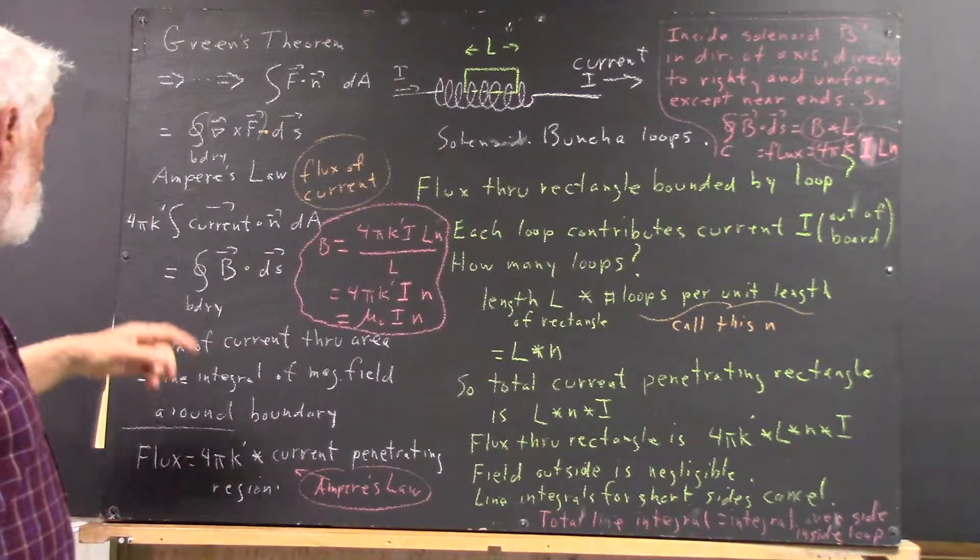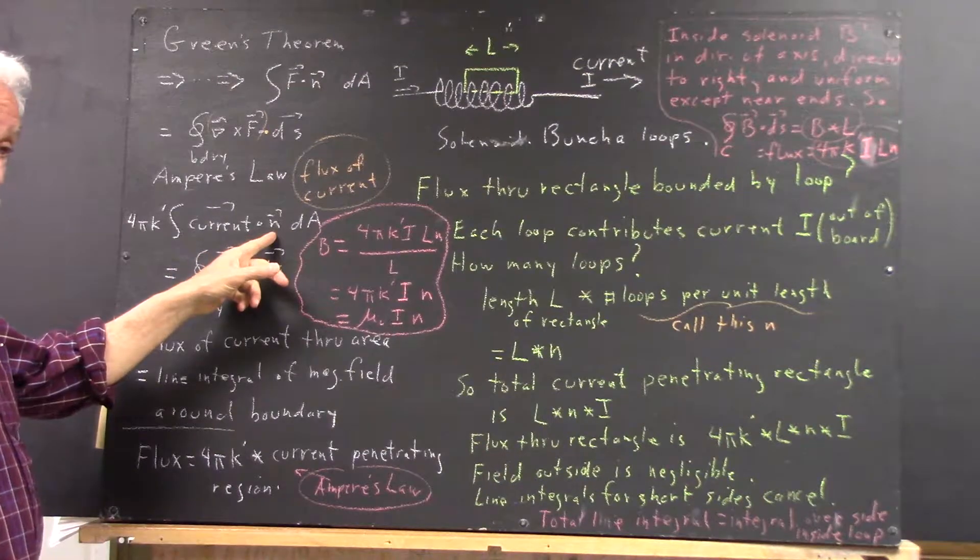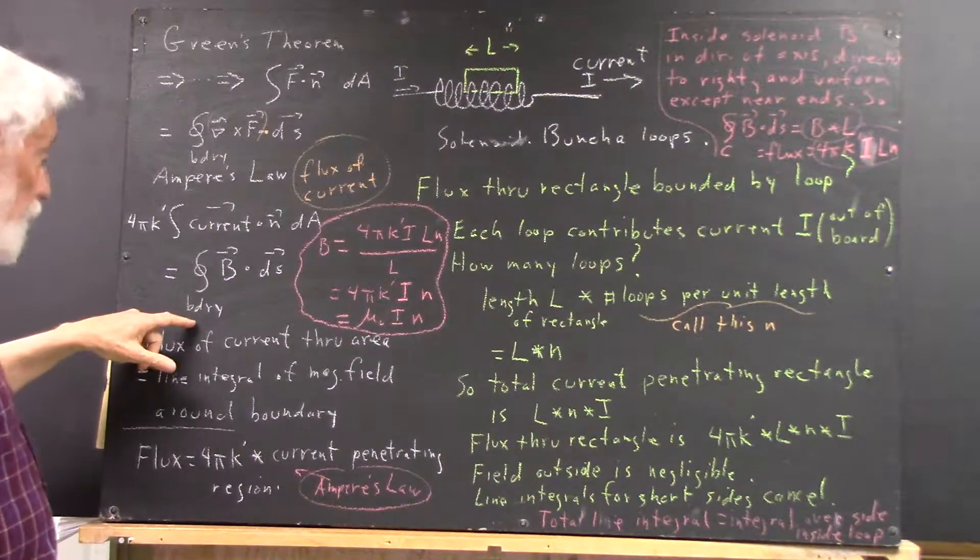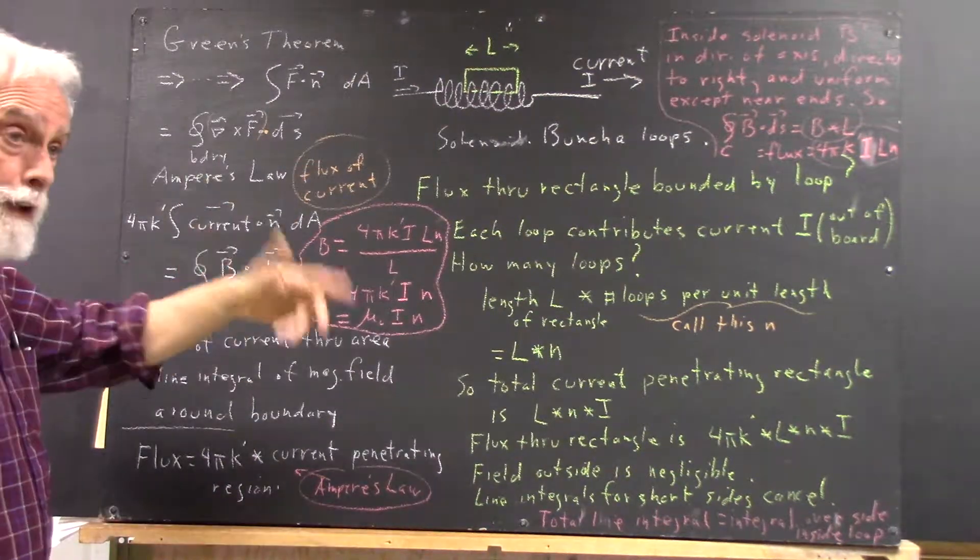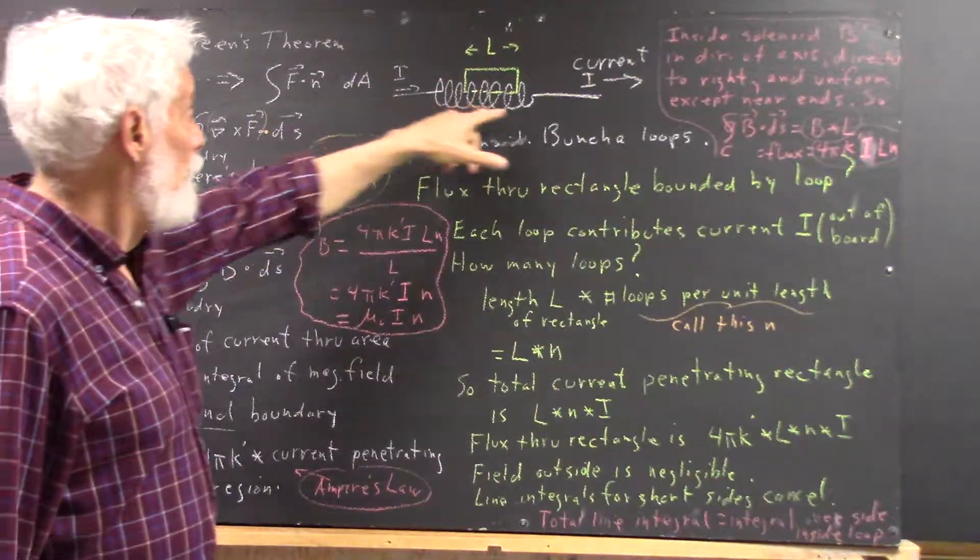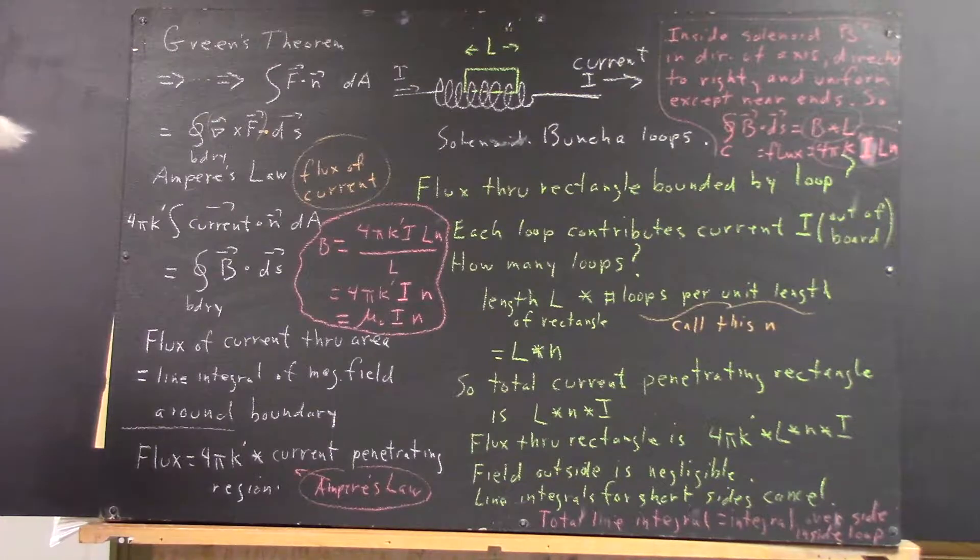So we're going to really be talking about the integral of the current dotted with the normal vector over a plane region and the boundary being a curve in the plane region. It's going to turn out that the region is a rectangle and the boundary is just the boundary of the rectangle. We'll see that in a minute.